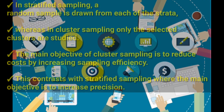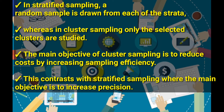Another difference is that in stratified sampling, a random sample is drawn from each of the strata. For example, you make groups of 10 students and choose one student from each of the groups. Whereas in cluster sampling, only the selected clusters are studied — you choose one group of 10 students and use that as your sampling unit.